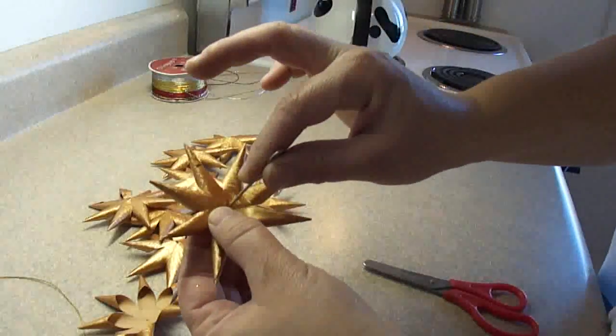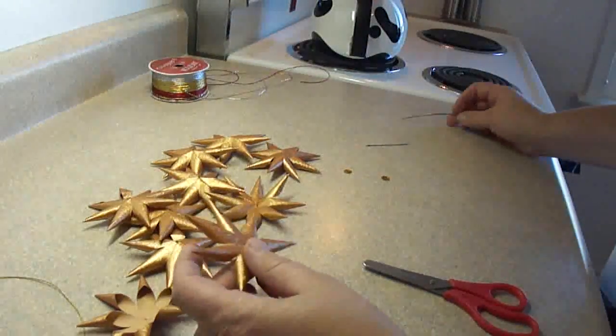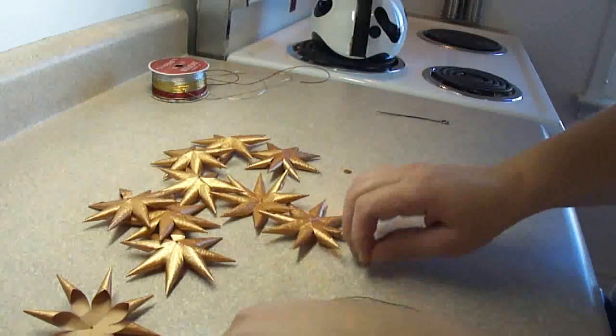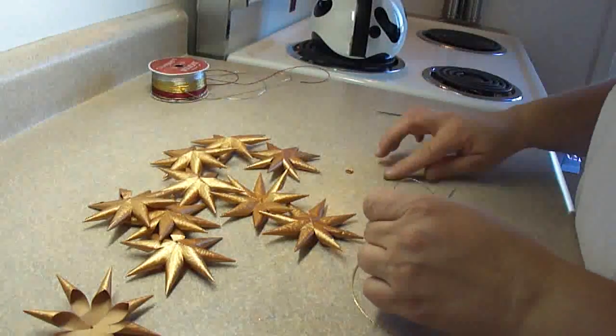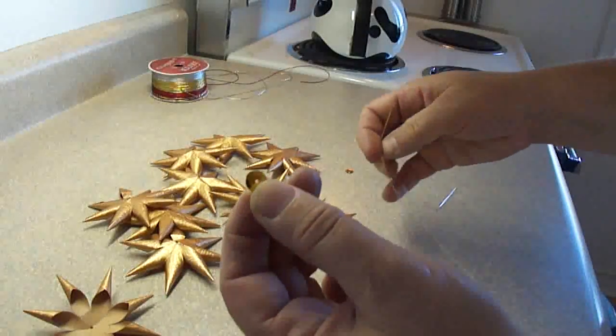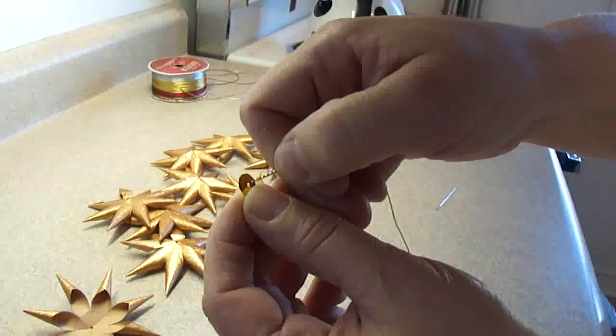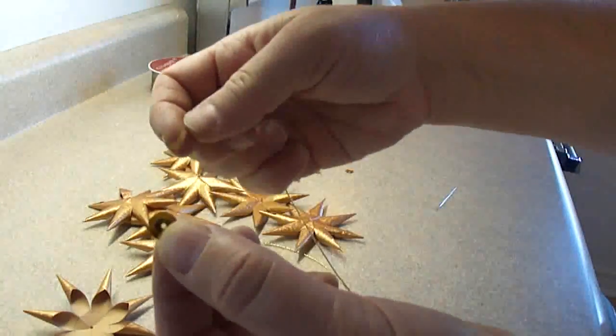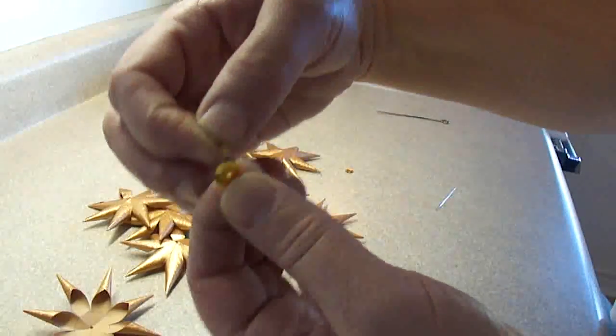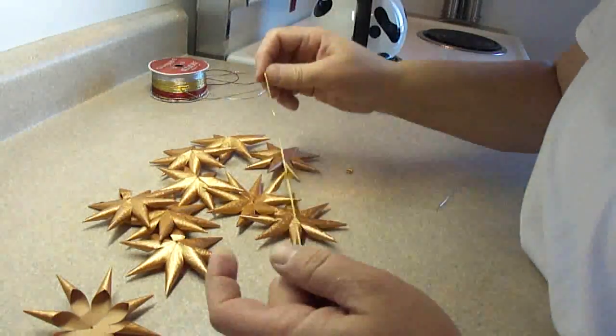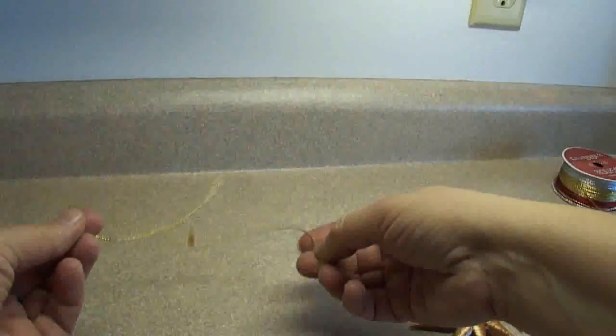Now you're going to use a skewer or some kind of object to make a small hole in the center of each star. You take your length of string, have fairly tough string because you don't want it to break easily. Then you're going to need a couple of sequins and you're just going to string the sequin onto the string. You can use a small button, you could use a bead, whatever you want. It just has to be something small.